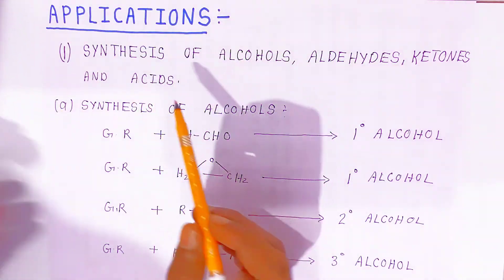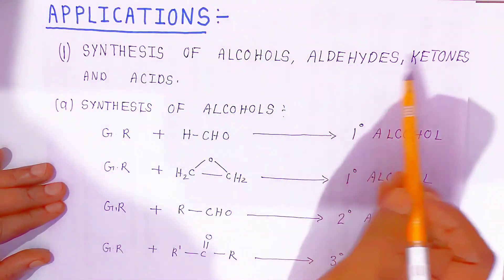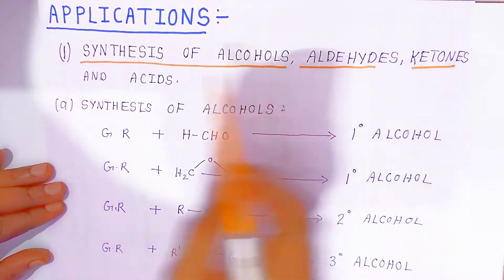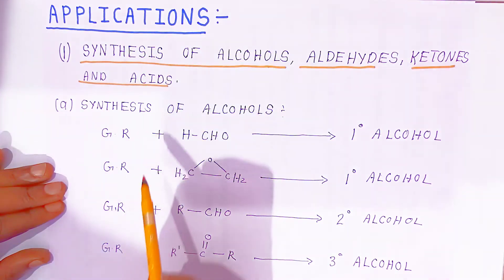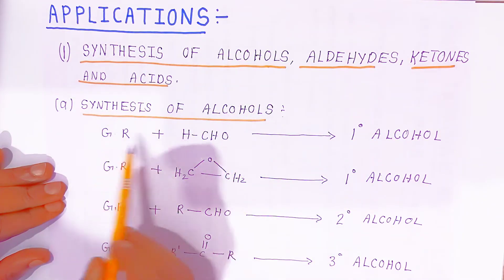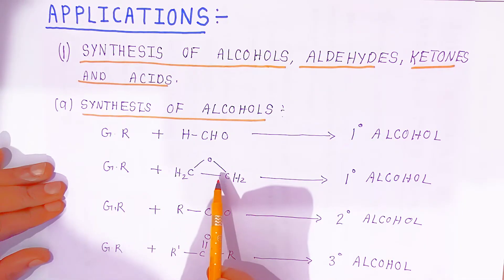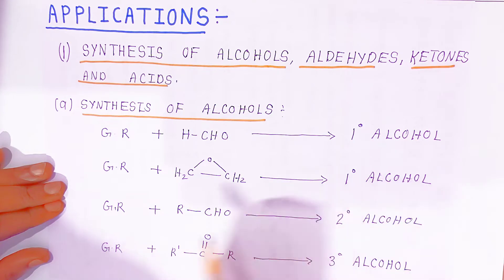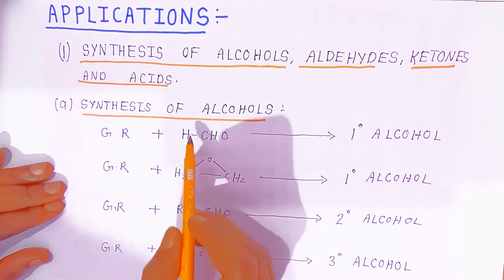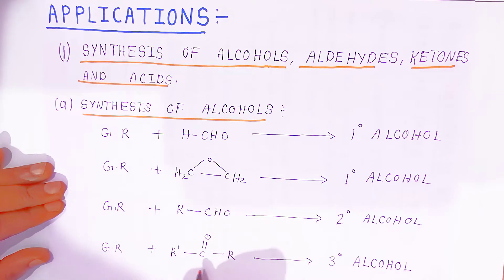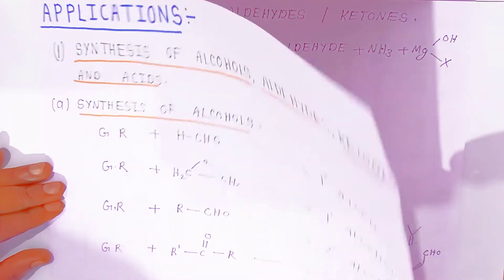Now we will see the applications, starting with synthesis of alcohols. Grignard reagent combined with formaldehyde gives primary alcohols. Grignard reagent reacting with alkyl aldehydes other than formaldehyde gives secondary alcohols. Grignard reagent reacting with a ketone also gives secondary alcohols. These are the types of alcohols obtainable from Grignard reagent.